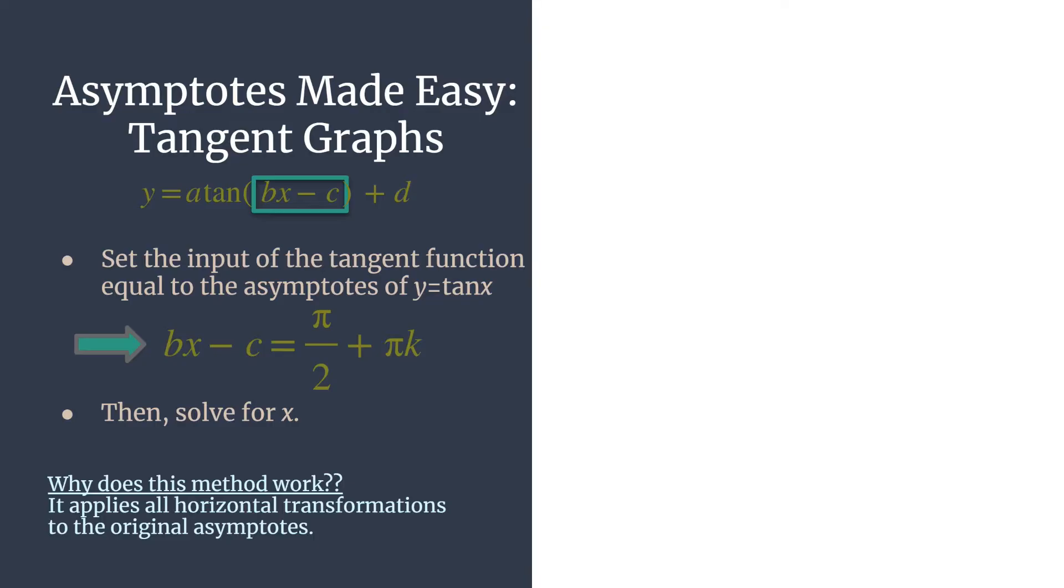Basically, you're taking all of those horizontal transformations in your equation, and you're applying them to the asymptotes, because horizontal transformations are the only type of transformation that will affect a vertical line.